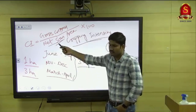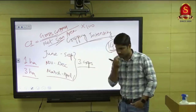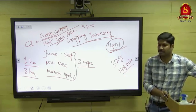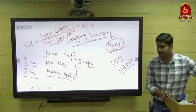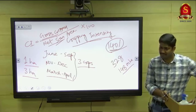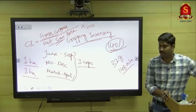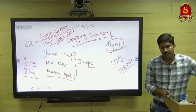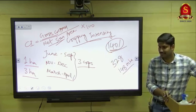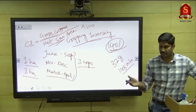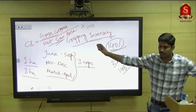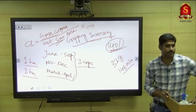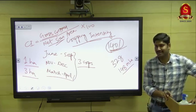We have the data: Net Sown Area and Gross Cropped Area. For sugarcane, since it is an annual crop, cropping intensity is only 100 percent — calculated on a yearly basis only. Most crops are field crops of three to four months duration; annual crops are exceptions. We can work out cropping intensity for each crop or overall — overall we have the Net Sown Area and Gross Cropped Area data.